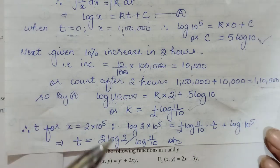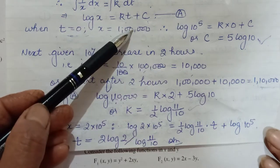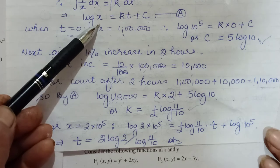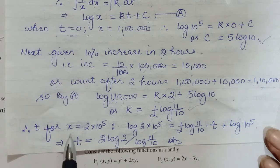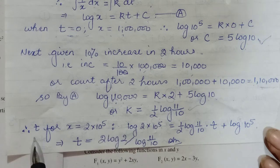Now coming to our final question where they had asked us what would be the time when count would be 2 lakh now. Okay. So now in place of x, 2 lakh will come.